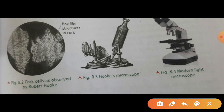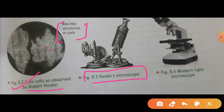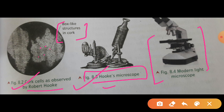You can see the cork cells as observed by Robert Hooke — box-like structures with nothing inside because the cells were dead. This is the crude, not-so-refined microscope used by Hooke, compared to the modern light microscopes seen in labs today. With advancements in instruments, we now have electron microscopes that allow us to see not only the cell but also subcellular structures — the organelles present inside the cell.